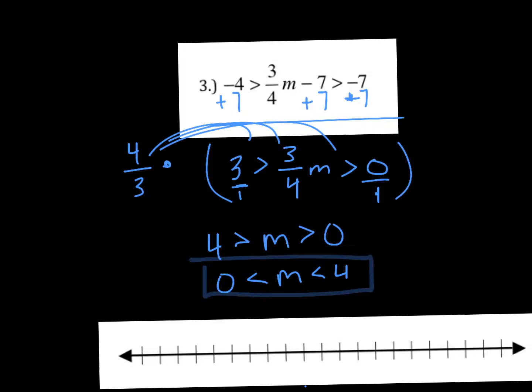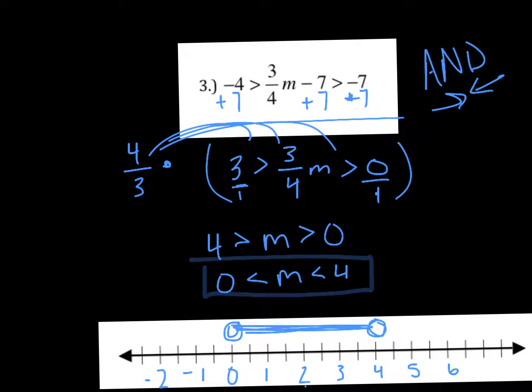Now we need to just graph it. So zero, one, two, three, four, five, six. Both of them are open because we're not including them in our solution. And it's an and so it's going to be shading in the middle. So just always remember that ands are in and ors will always go out.